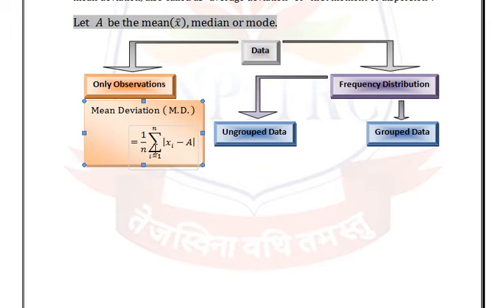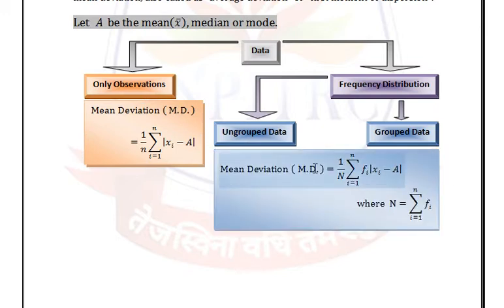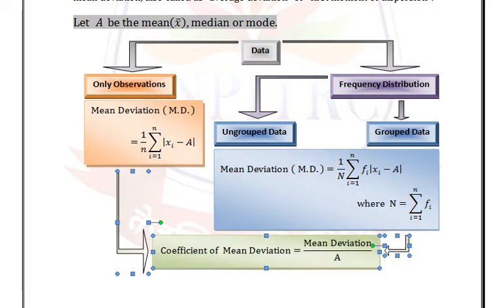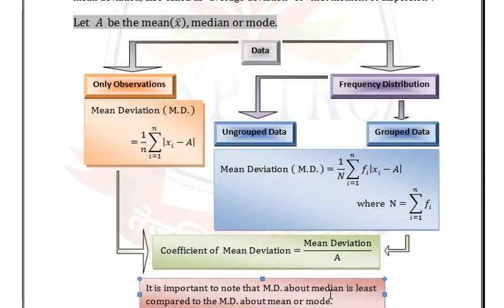The formula for only observations: mean deviation = (1/n) × summation of |xi - A|, where capital A is mean, median, or mode, and small n is the total number of observations. For frequency distribution: mean deviation = (1/N) × summation of fi × |Xi - A|, where capital N is the sum of all frequencies. The coefficient of mean deviation = mean deviation divided by capital A. Note that mean deviation about median is least compared to mean deviation about mean or mode.